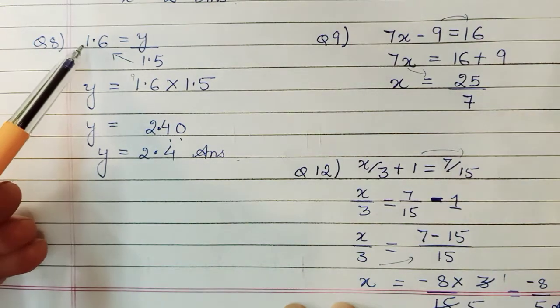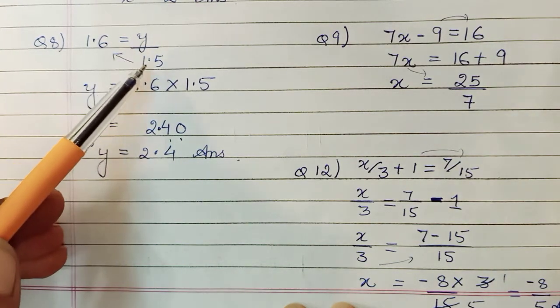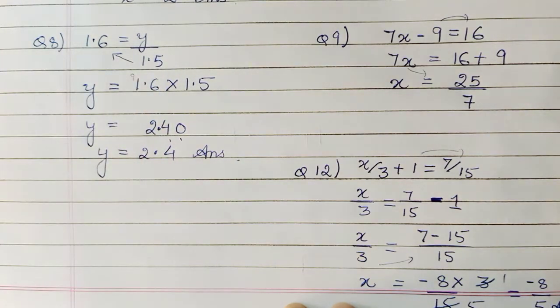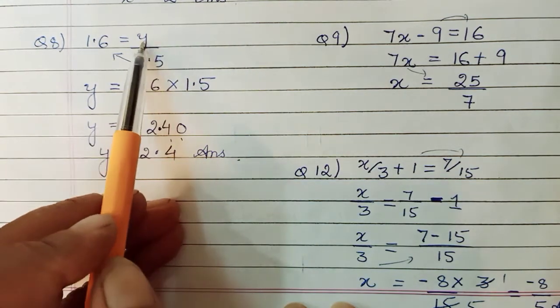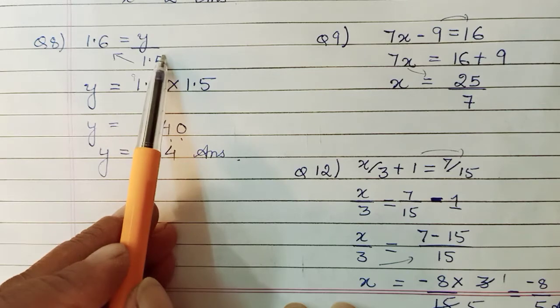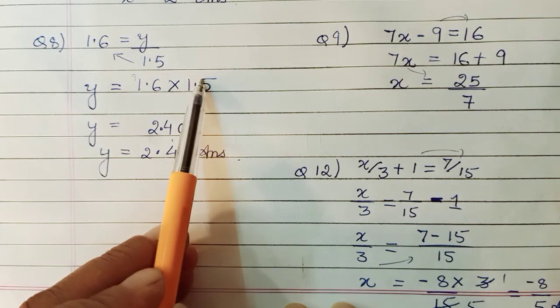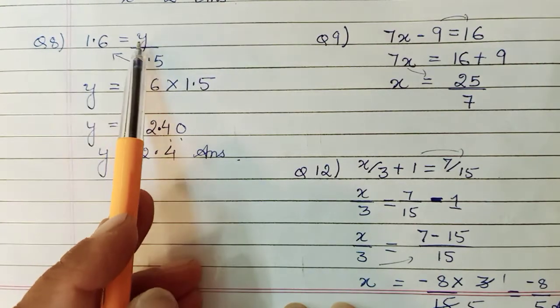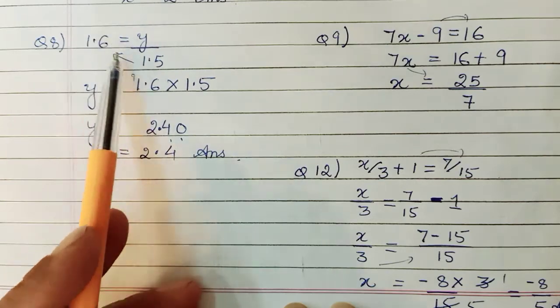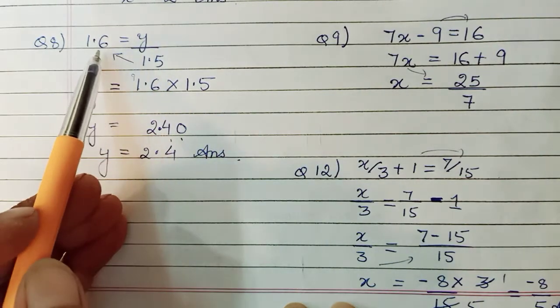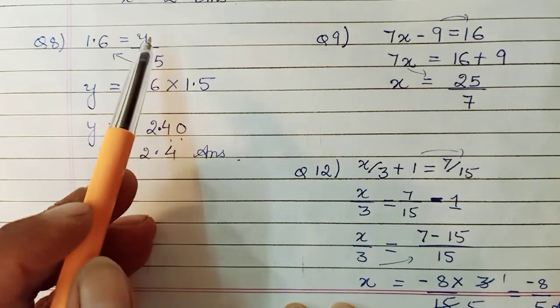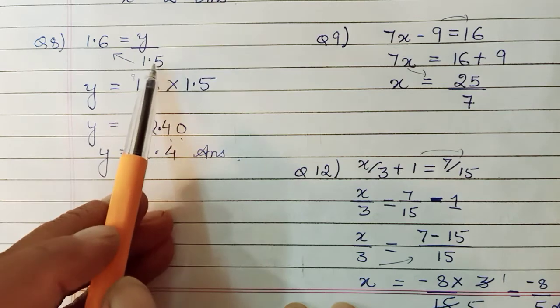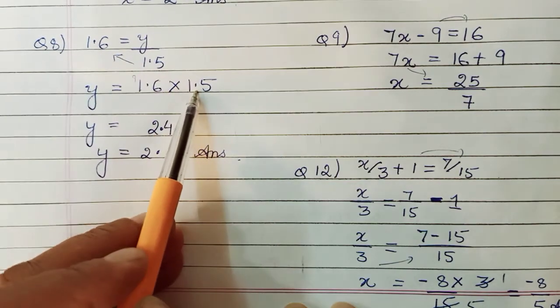Move on to the eighth one, which was 1.6 equals y upon 1.5. Nothing difficult. It is simple. So you don't have to panic seeing those decimals there. So to find y, 1.5 from denominator has to be removed. So it will go to the other side. Will come in the numerator. Cross multiplying also, which you call. So y equals, now I've put the variable to the left side and this whole expression on the right. Side change is from where y is and where y is not.